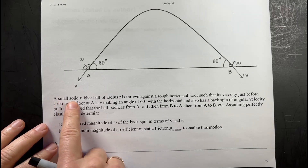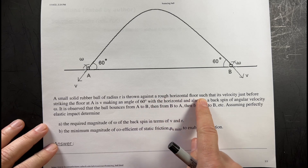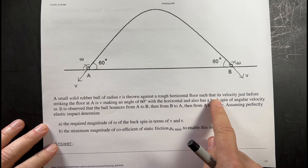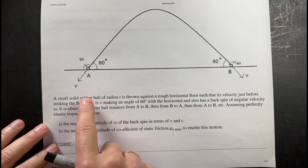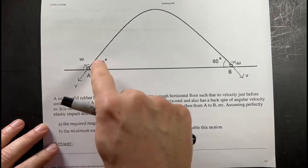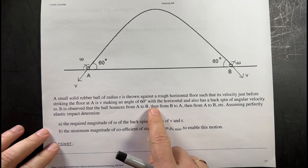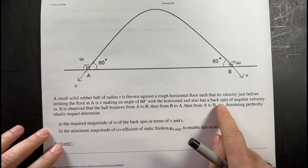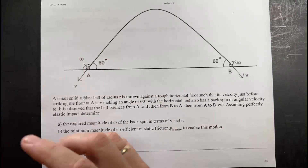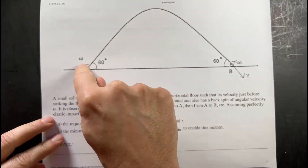A small solid rubber ball of radius R is thrown against a rough horizontal floor. So here's the floor. Such that its velocity just before striking the floor at A is V — the vector is going down that way — and that angle is 60 degrees. It also has a backspin of angular velocity omega, so it's spinning this way while moving this way.